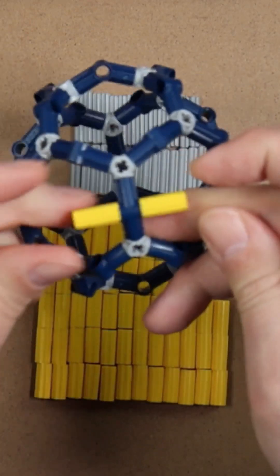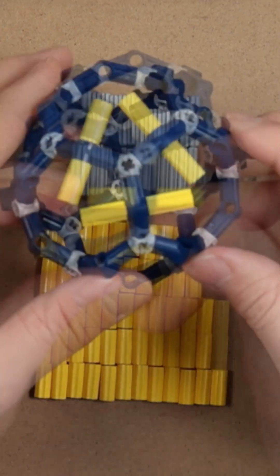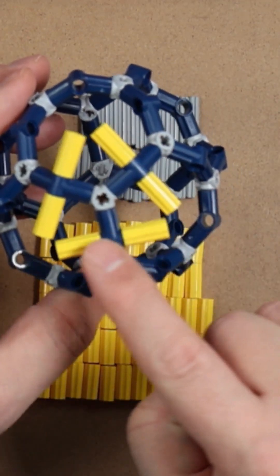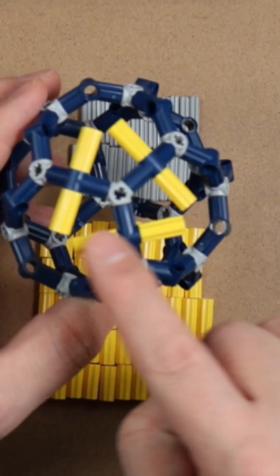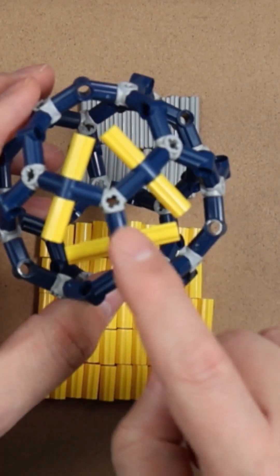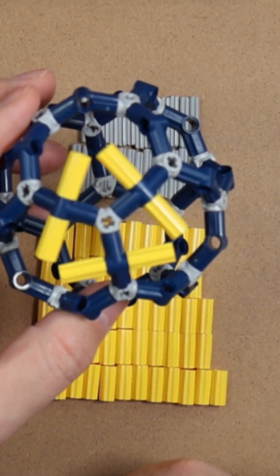And now repeat. Okay, and now you can see we've done it on three, and lo and behold, we can see our triangle. That's one of the faces of our icosahedron.